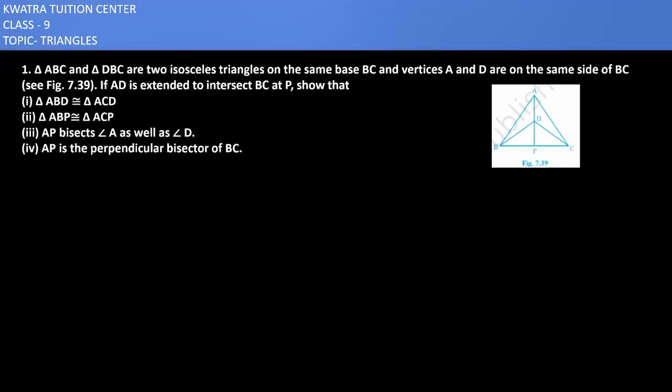Let's start with question number 1 of exercise 7.3 on triangles. In this problem, triangle ABC and triangle DBC are isosceles triangles on the same base BC, with vertices A and D on the same side of BC. If AD is extended to intersect BC at P, we need to show that triangle ABD is congruent with triangle ACD.